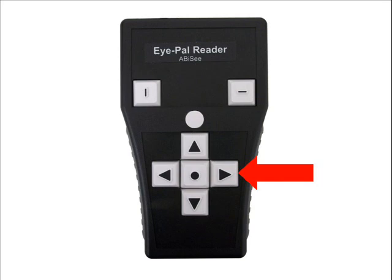Below the Pause Resume button is the Down Arrow button. It is marked with an arrow pointing down. This button is used to read the next sentence.